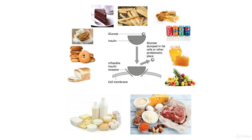This diagram shows the kinds of foods that are associated with insulin resistance, where glucose is more likely to be dumped into fat storage.